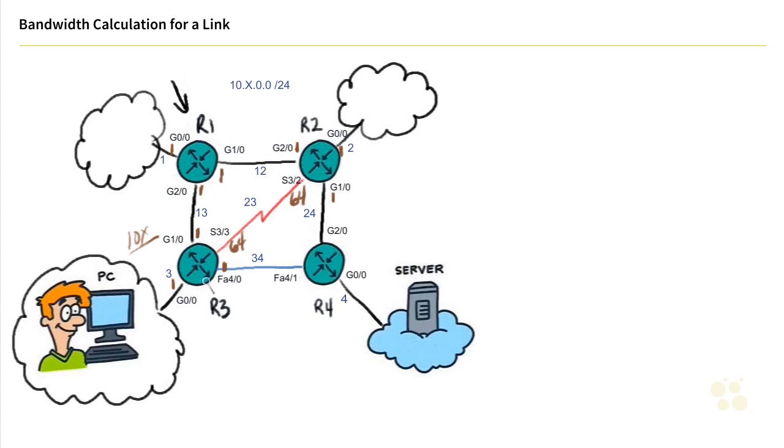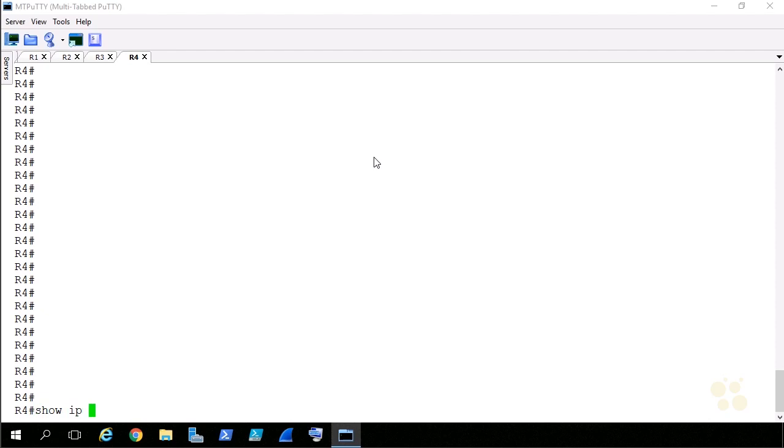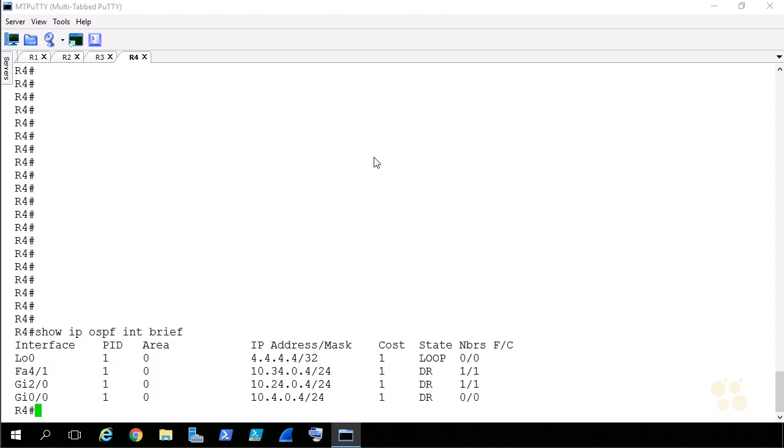And then based on that information, if we go over to R4, we can guess what they're going to be. It's going to be a 1 for the gigabit, a 1 for the gigabit, a 1 for this gigabit, and probably also a 1 here on 4 slash 1. Let's go verify that. So we'll go to R4, and we'll issue that command again, show IP OSPF interface brief, and sure enough, everything's a cost of one.